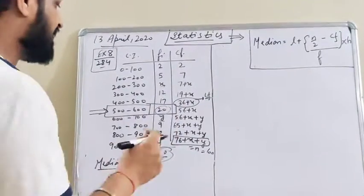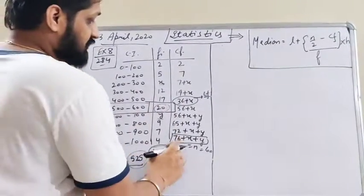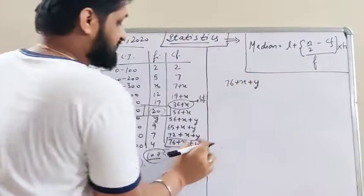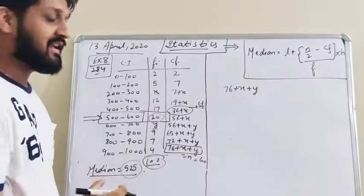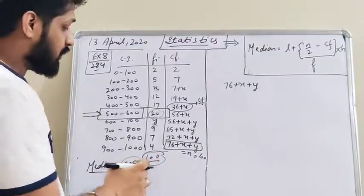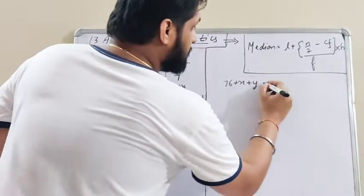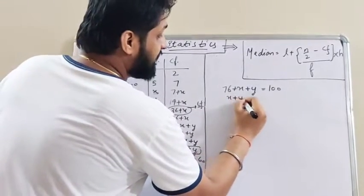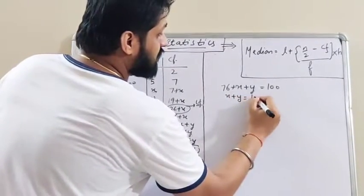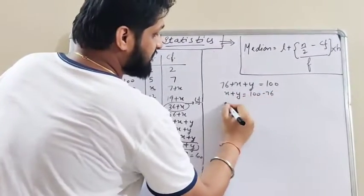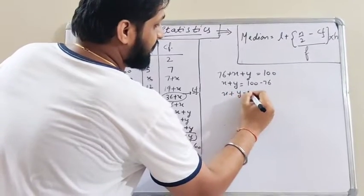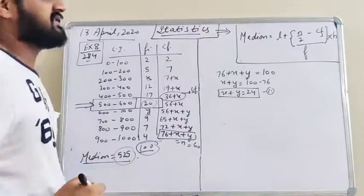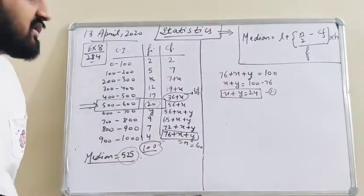The last cumulative frequency, 76 plus x plus y, must equal n, which is 100. So x plus y equals 100 minus 76, which gives us x plus y equals 24. This is our first equation.